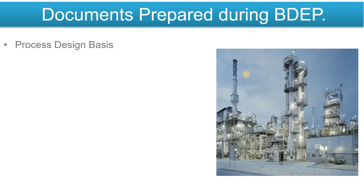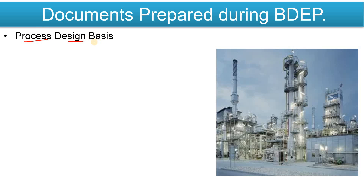The first document you will prepare is the Process Design Basis. In this document you will define the project, define the process description. There is a lot of information about site conditions, raw material specification, product specification, design codes, scope of supply, and a complete overview about the process, electrical, piping, and instrumentation — the complete overview will be in this Process Design Basis.